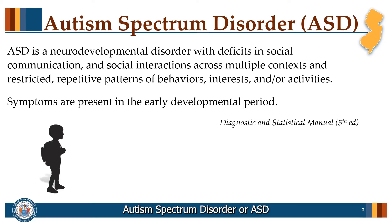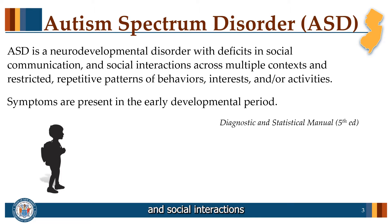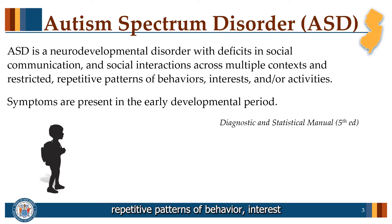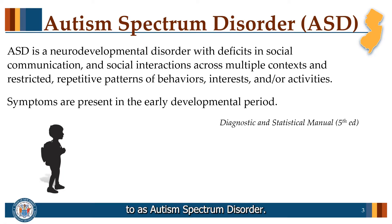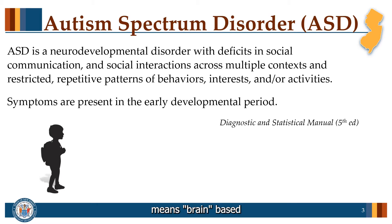Autism Spectrum Disorder, or ASD, is a neurodevelopmental disorder with deficits in social communication and social interactions across multiple contexts, and restricted repetitive patterns of behavior, interests, or activities. Symptoms are present in the early developmental period of child development. If we break it down, neuro means brain-based, involving both structure and connections.